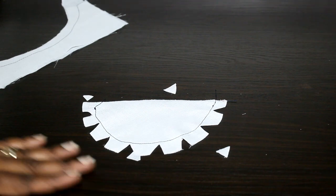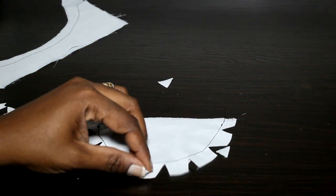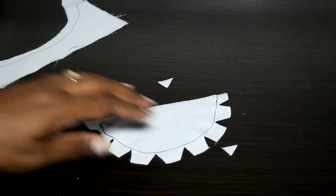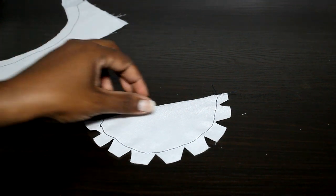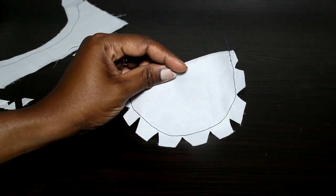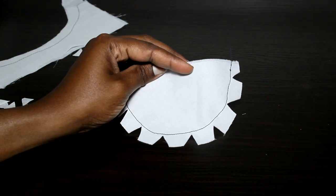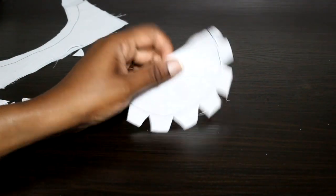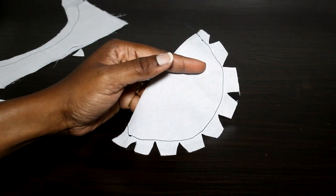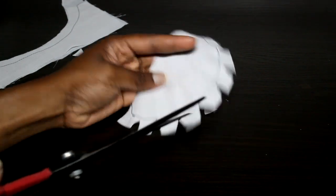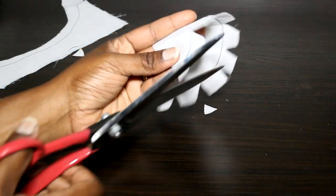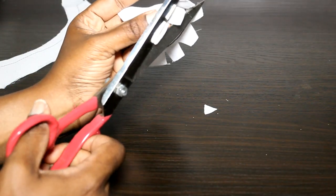So those are notches, that's how you make notches. Essentially what you've done is reduce the fabric so that when you turn it right side out it's less fabric and it's flat. Now with light fabric like this I can leave it this way, or if it's thicker, once again I can just trim the whole thing down, just to make it less.